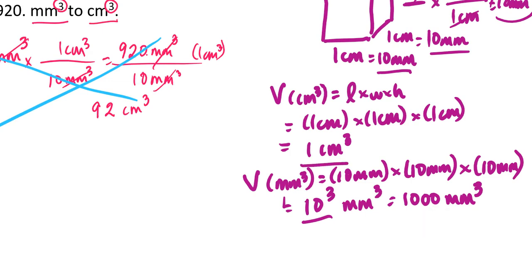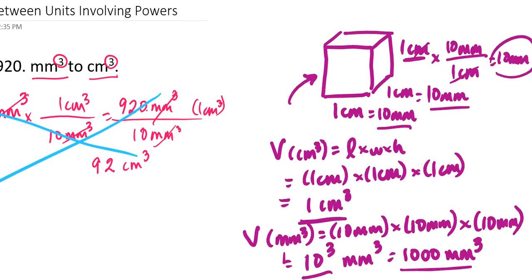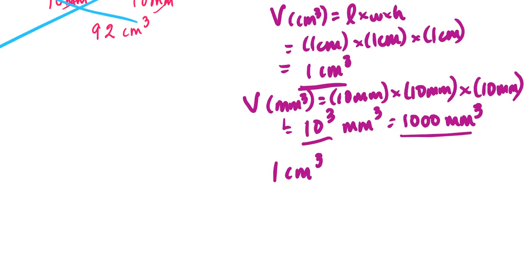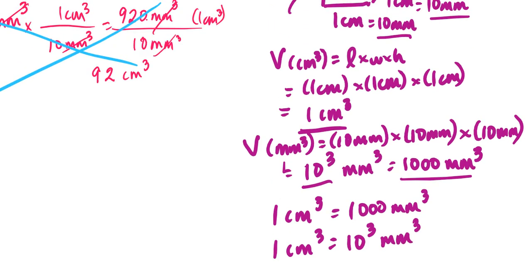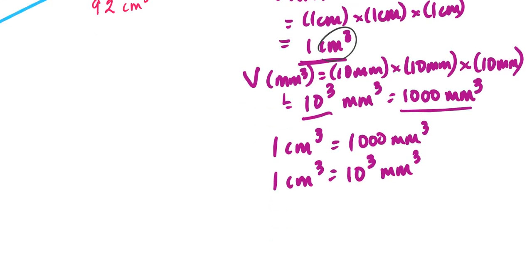So that means this volume of 1 centimeter cubed and 1,000 millimeters cubed have to equal each other, because we're still talking about the same cube. That means 1 cubic centimeter is actually equal to 1,000 cubic millimeters. In exponential notation, 1 centimeter cubed equals 10 to the third millimeters cubed. To convert, you have to cube both the number and the units in the conversion factor — 1 cubed centimeters cubed equals 10 cubed millimeters cubed, or 1,000 millimeters cubed.